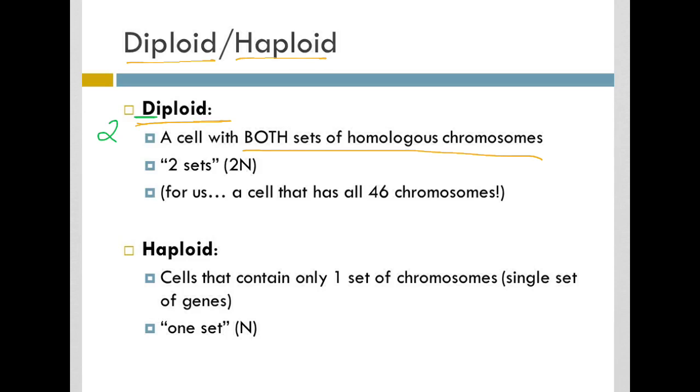Therefore, diploid literally means two sets. And we will sometimes refer to a diploid cell as being 2n. If you think of n as a variable, this is always the number of types of chromosomes you have. This is the number of pairs or number of sets.